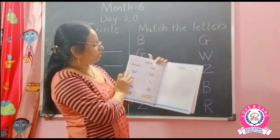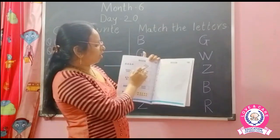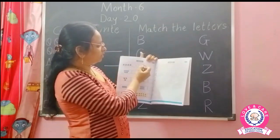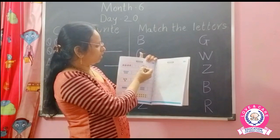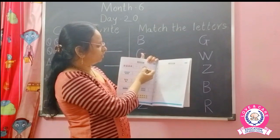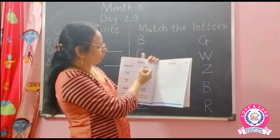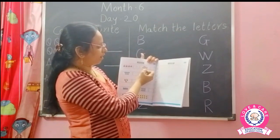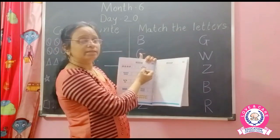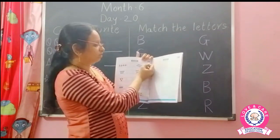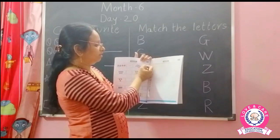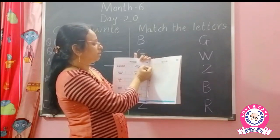Now next — chair. How many chairs? Count: 1, 2, 3, 4, 5 and 6. So write here number 6.